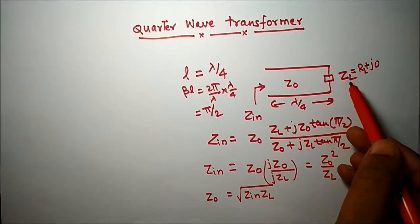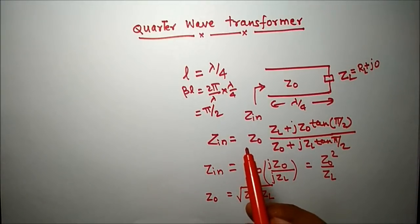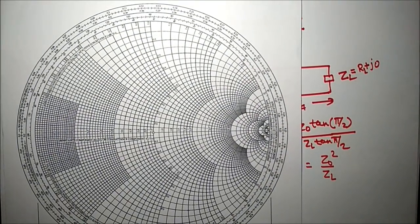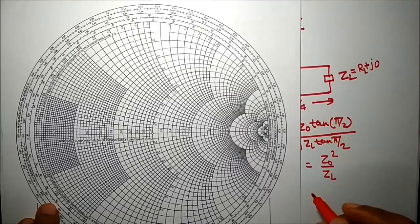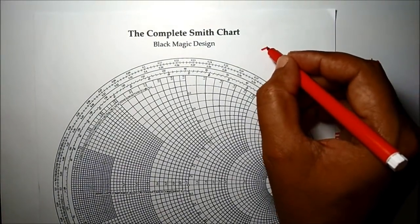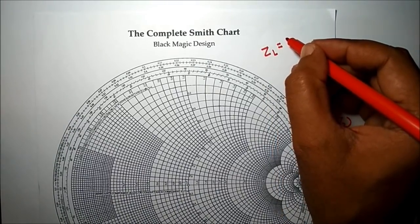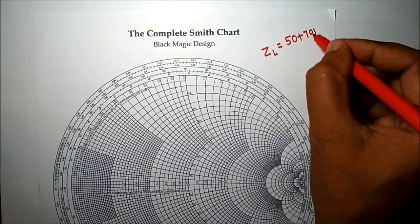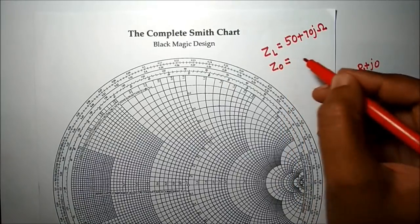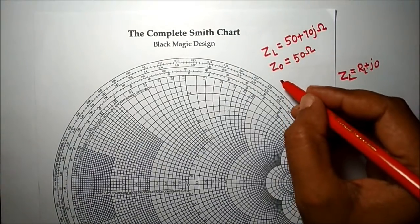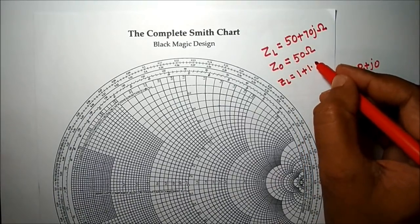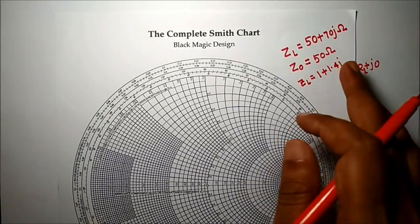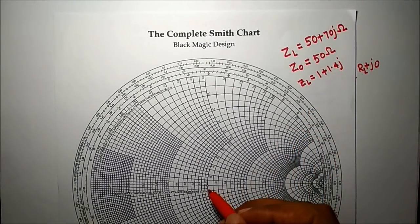This property can be used to match any load with the line. For that we will use the Smith chart to identify the load value. For this problem, ZL = 50 + 70j ohm and Z0 = 50 ohm. So the normalized load equals (50 + 70j) / 50 = 1 + 1.4j.